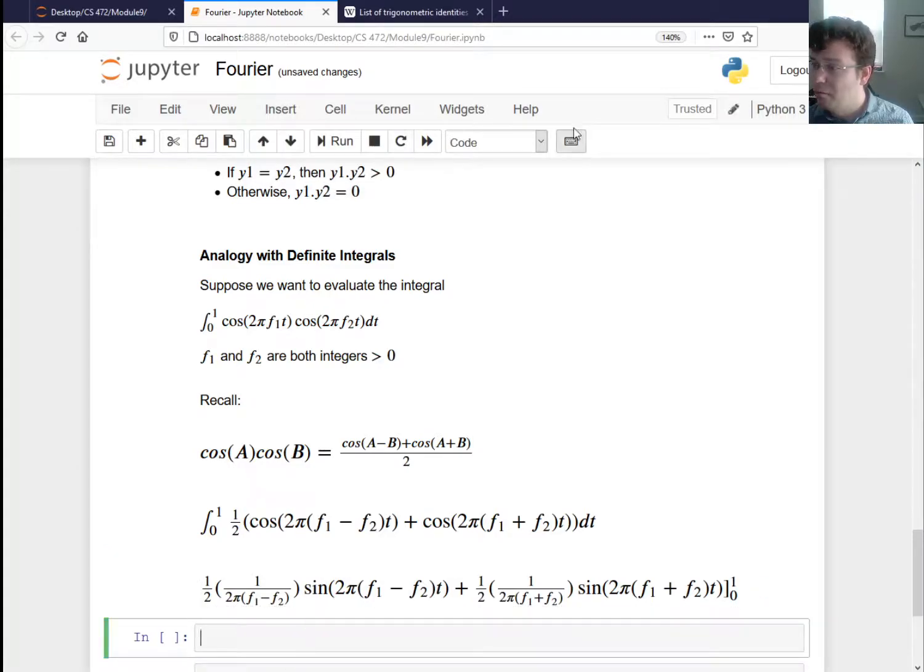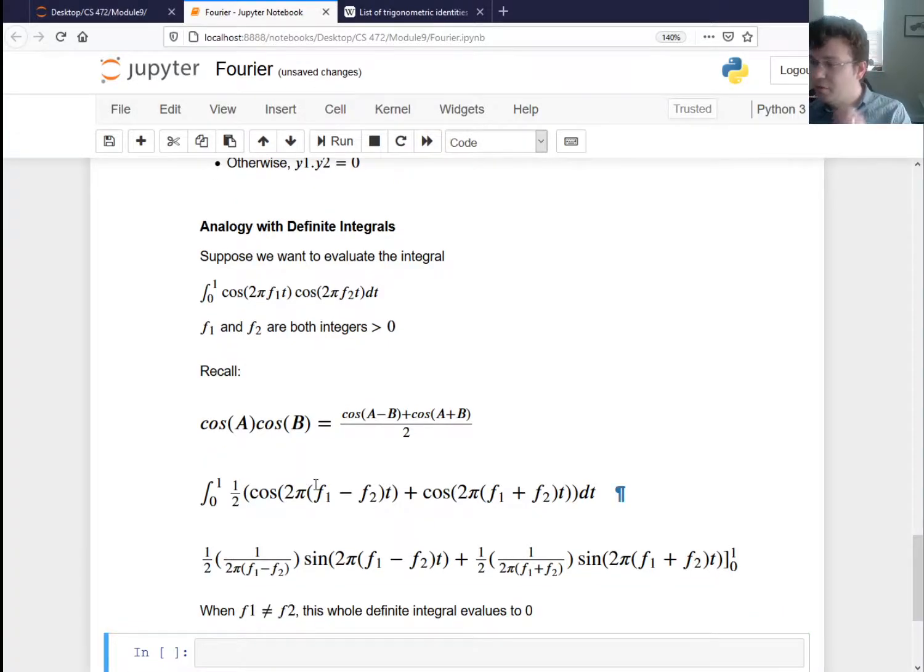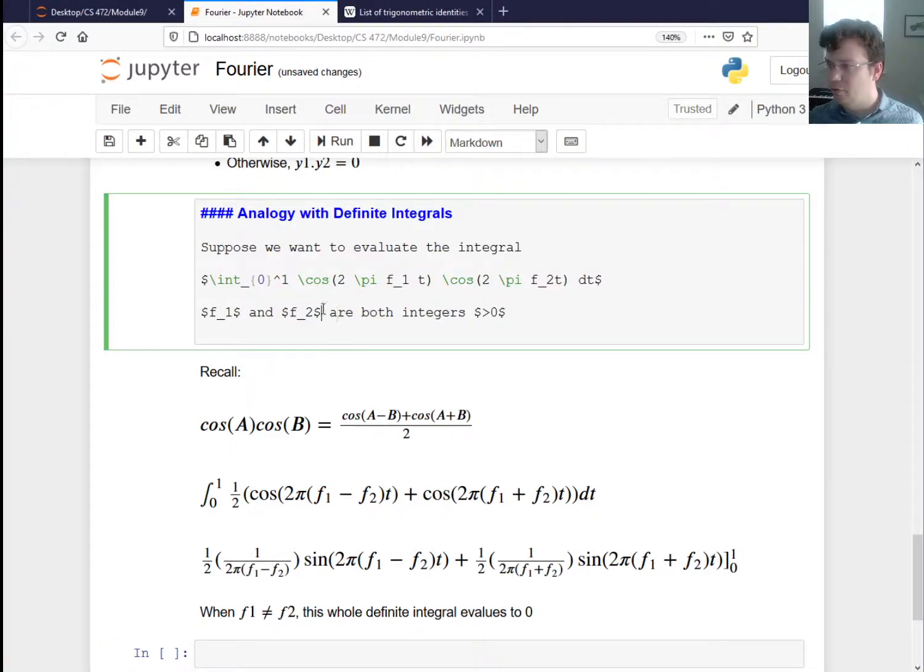So when F1 is not equal to F2, this whole expression, this whole definite integral, evaluates to zero. So that's sort of how you end up seeing that if you have a cosine of two things that are different, and you integrate them over some integer number of cycles, you integrate their products, that you get zero. So this is sort of a proof to show why the dot product is zero. You could show a similar thing if this is cosine and this is sine, or if they're both sines. Very similar trig identities. So I'm not even going to go through the details. But those proofs hold.